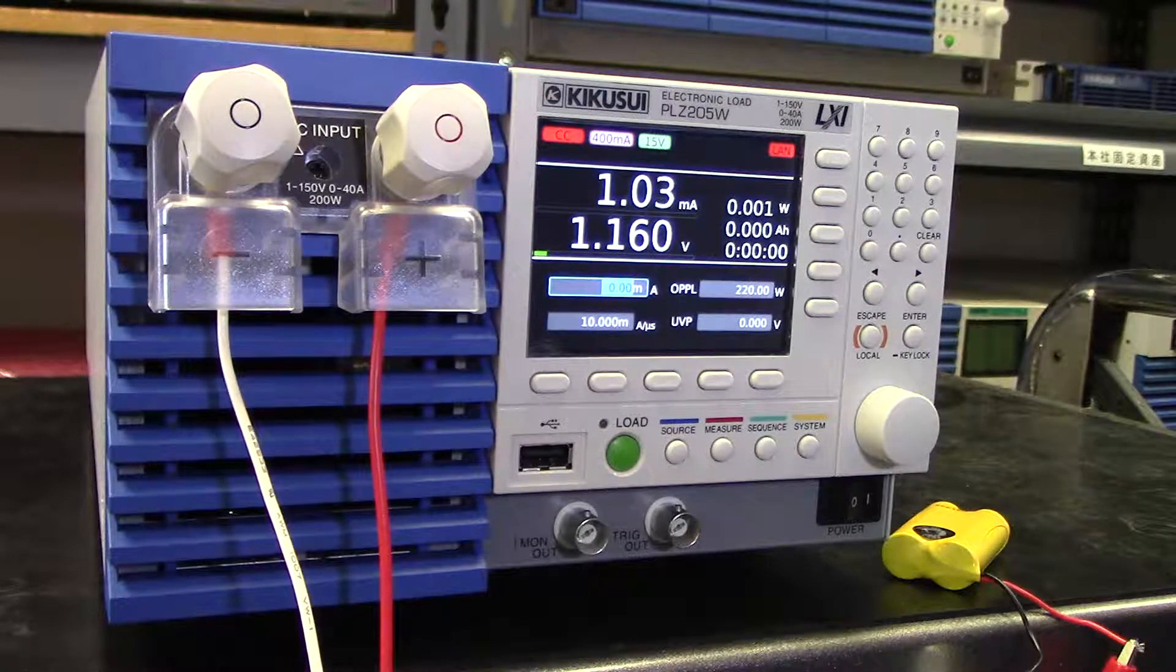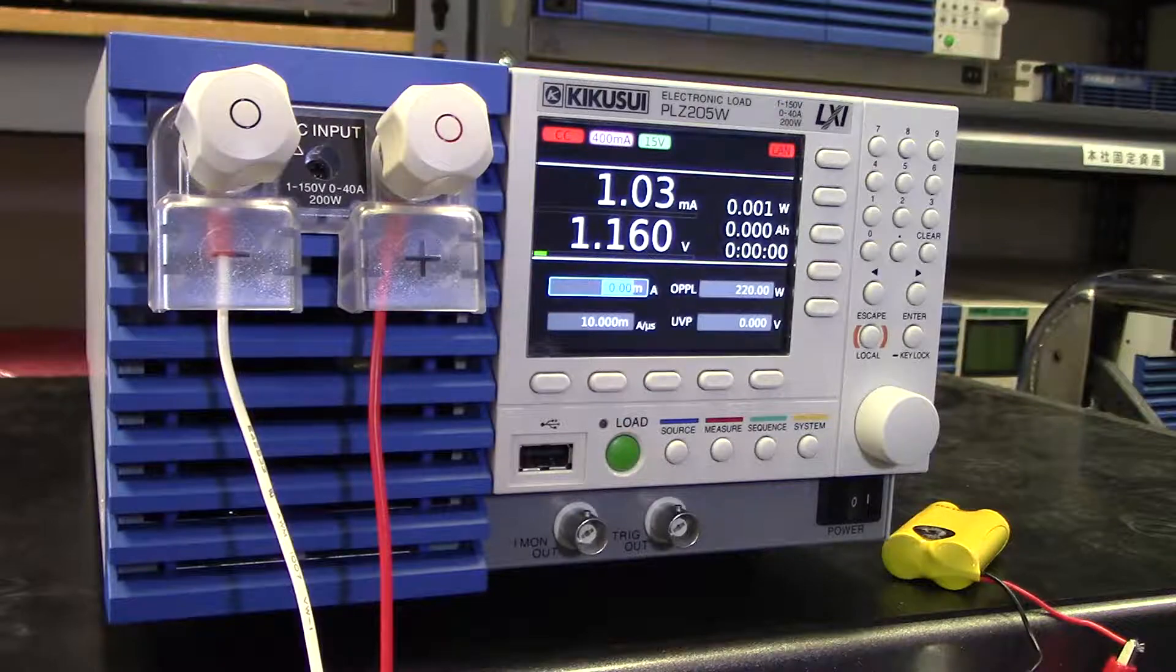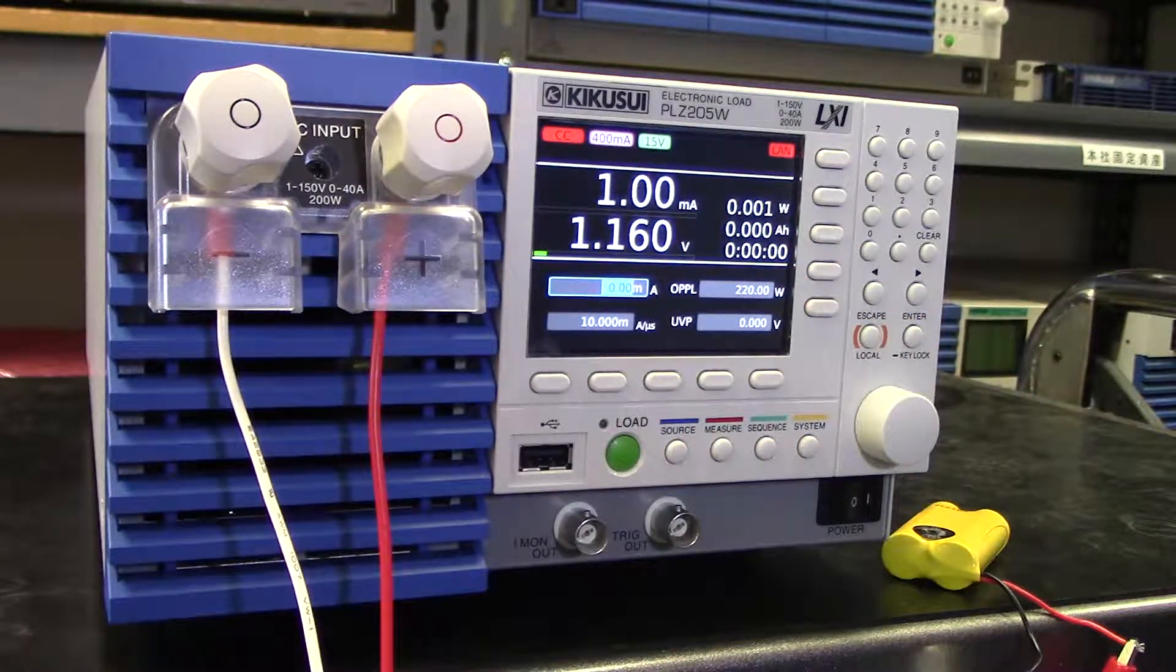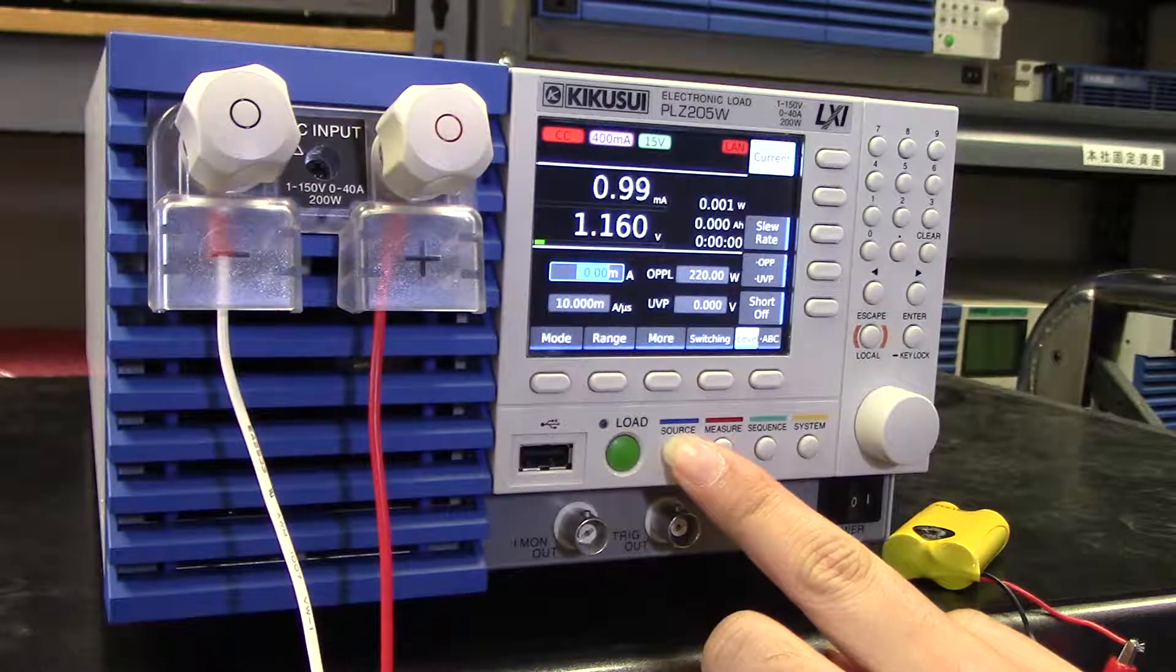Now after you've connected your battery, set the unit to CC mode and enter the current value you wish to discharge. So in this case, we'll set the load to discharge 100 milliamps.